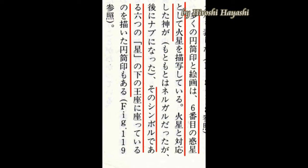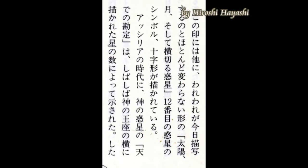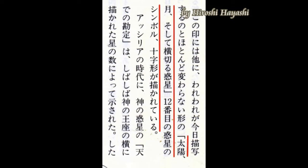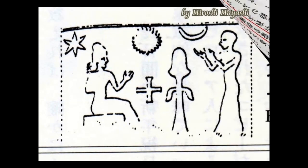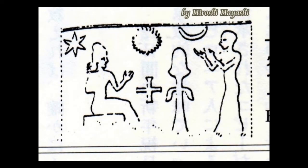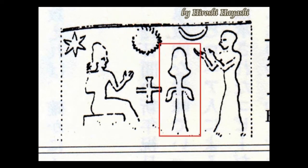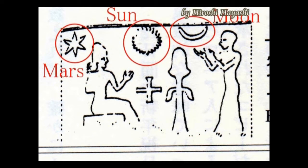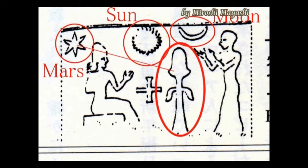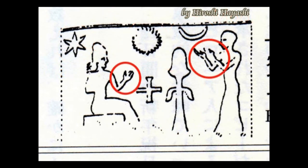そして、中央にイギギが描かれています。ゼカリアシッチンは、イギギは火星人だと説いています。六つの星の下にいるのがイギギ、すなわち火星人というわけです。そして、十二番目の惑星のシンボル、第十二惑星ニビルの十字形が描かれているということになります。中央に太陽、その下に第十二惑星ニビルが描かれています。そして、その右下にイギギ、すなわち火星人が描かれています。そして左上には、火星のシンボルマークである六方星が描かれているというわけですね。